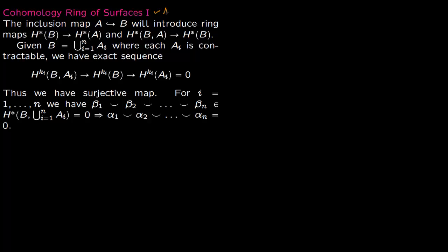Consider this map: A is included in B and then you compress A to a point. This inclusion map introduces a ring map. Due to contravariance, if the arrow goes from A to B, then the cohomology ring arrow goes in the opposite direction. Then for B relative to A, the arrow goes from H*(B,A) to H*(B). This contravariance emerges because of the hom functor.